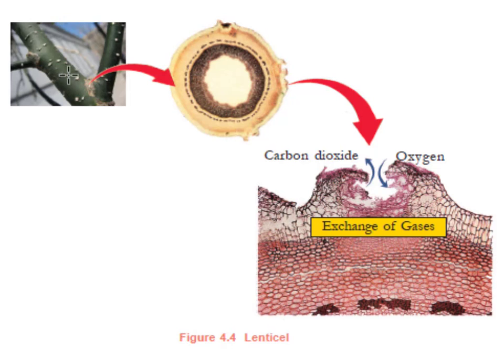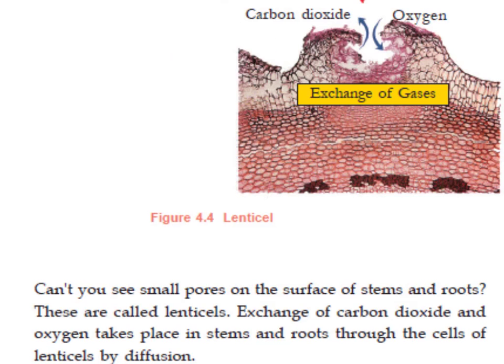The small pores seen on the stems and in the roots are called lenticels. Exchange of carbon dioxide and oxygen takes place in stems and roots through lenticels by diffusion.